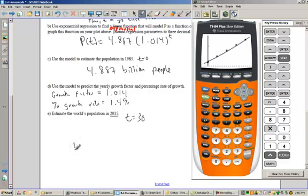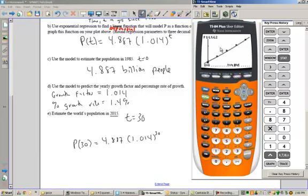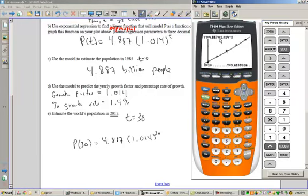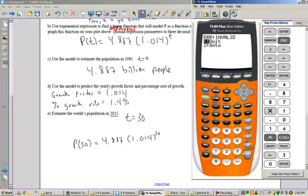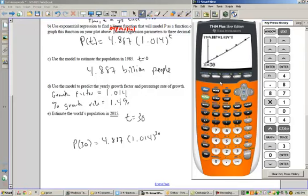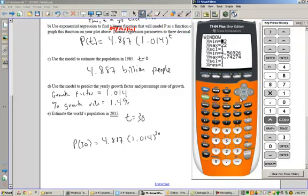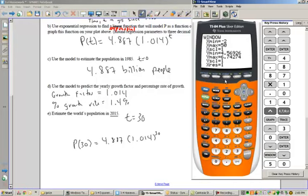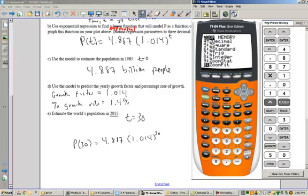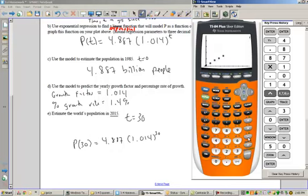So P of 30 is equal to 4.887 times 1.014 to the 30. Now remember, you can do it on the graph here, but if you hit trace, first you have to make sure you go up to the formula. And then when you try to hit in 30, it'll probably say error because your window is too small. So you can hit go to and make your window a little bit bigger. So there's 22, let's go to 50. Then hit zoom, zoom fit, and it should give you a nice looking graph.